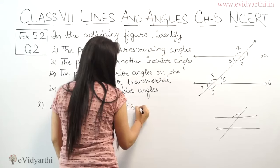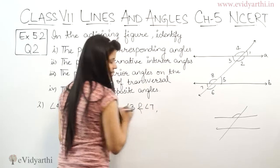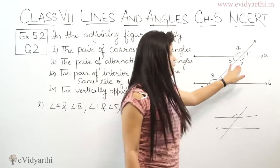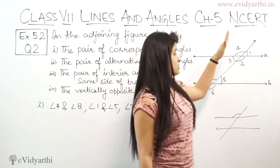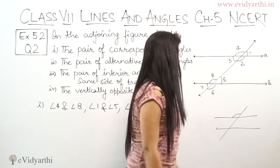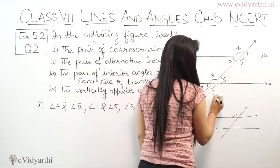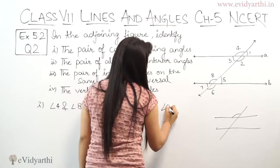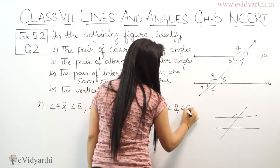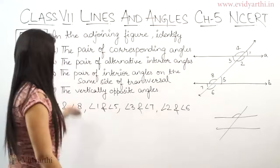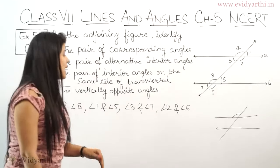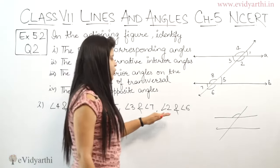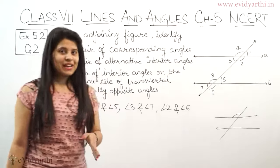Now last, what we have remaining is angle 2. Angle 2 is below the parallel line and on this side of the transversal. In B, below the parallel line and on this side of the transversal is angle number 6. So angle 2 and angle 6 are corresponding angles. So here the pairs of corresponding angles are 4 and 8, 1 and 5, 3 and 7, and 2 and 6. All these are corresponding angles.